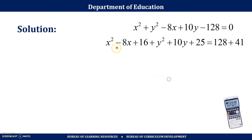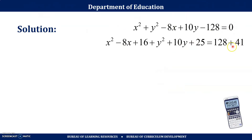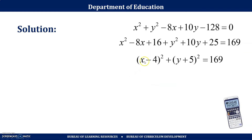The left side is now a perfect square, and on the right side we combine to get 169. So we have (x − 4)² + (y + 5)² = 169. Therefore the center of the circle is at (4, −5) and the radius is 13.